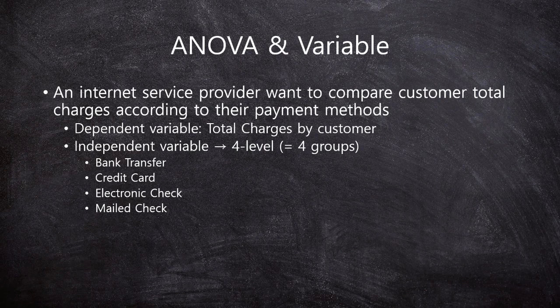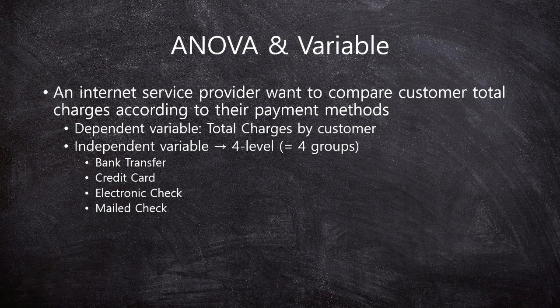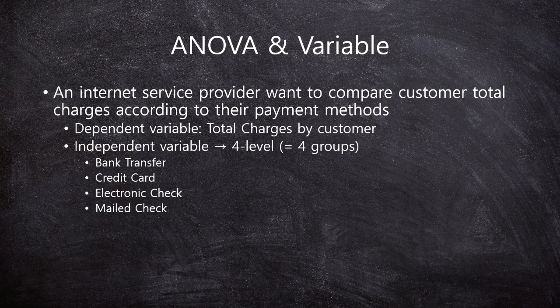Finally, an internet service provider company wants to compare their customers' total charges according to their payment method. The dependent variable is total charges by customer — the amount of money paid — so it's a continuous variable. The independent variable has four levels or four groups: bank transfer, credit card, electronic check, and mail check. This independent variable is categorical, so we have a very good case for one-way ANOVA.